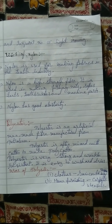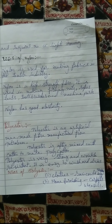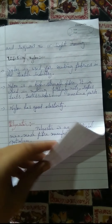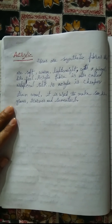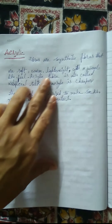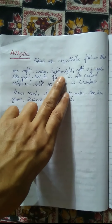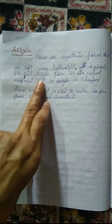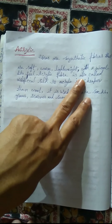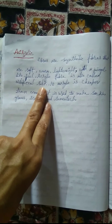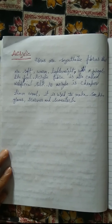Polyester is also used in home furnishing, carpets, utensils, and plastic bottles. Acrylic fibers are synthetic fibers that are soft, warm, and lightweight with a wool-like feel. Acrylic fiber is cheaper than wool.